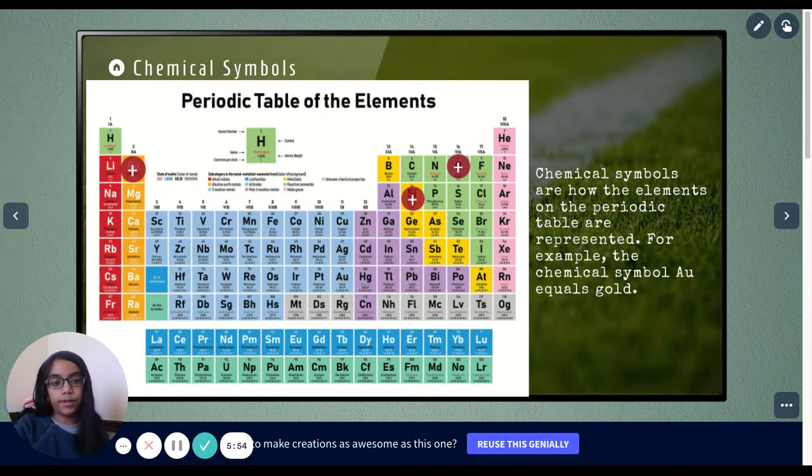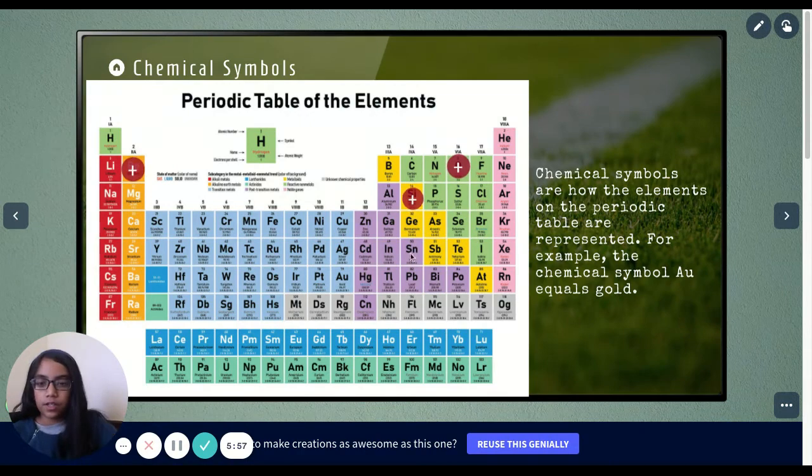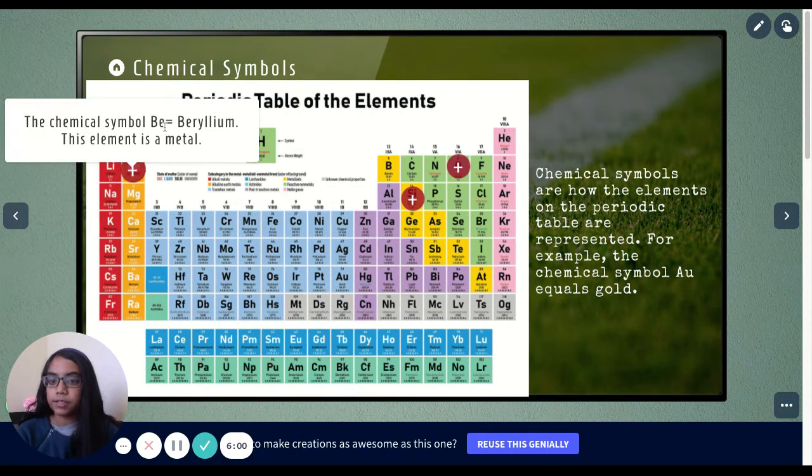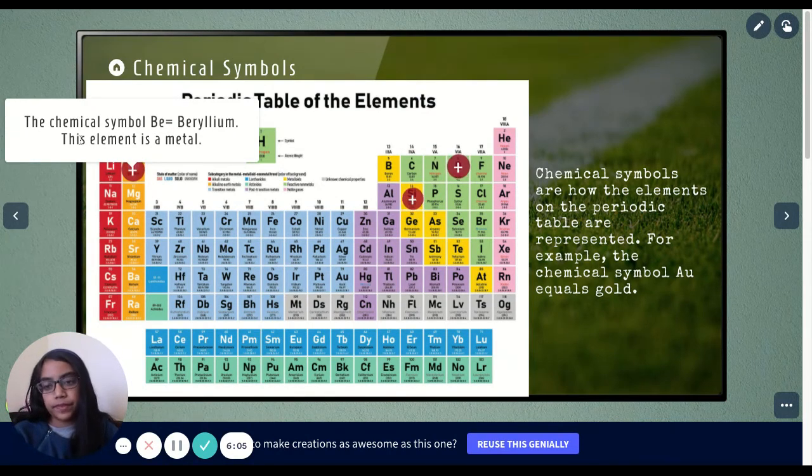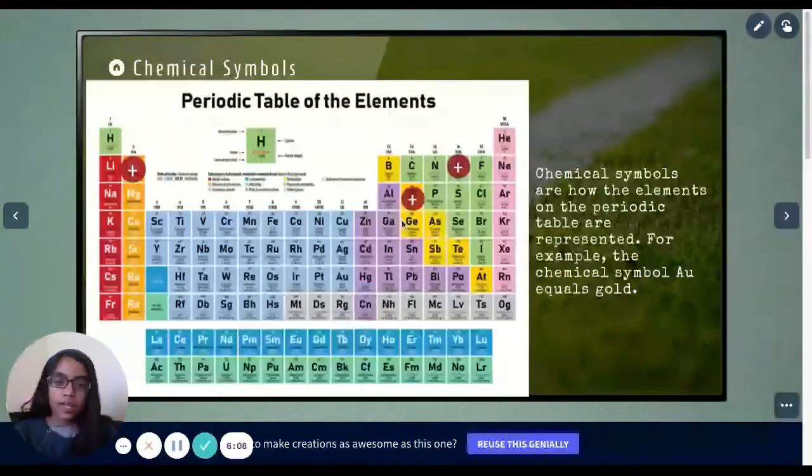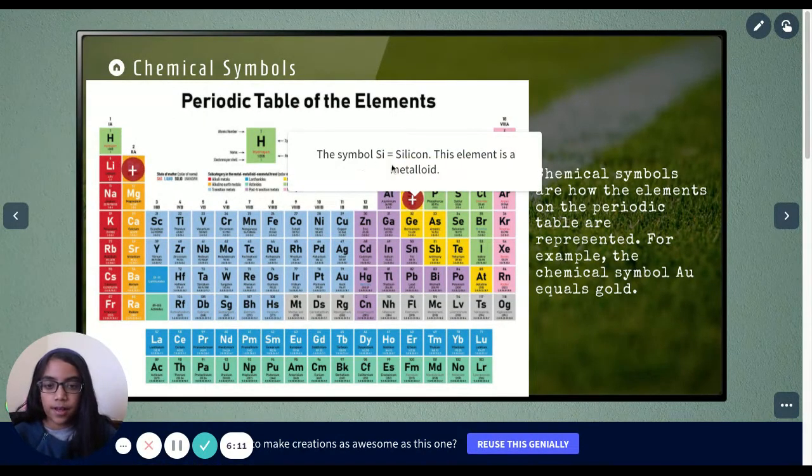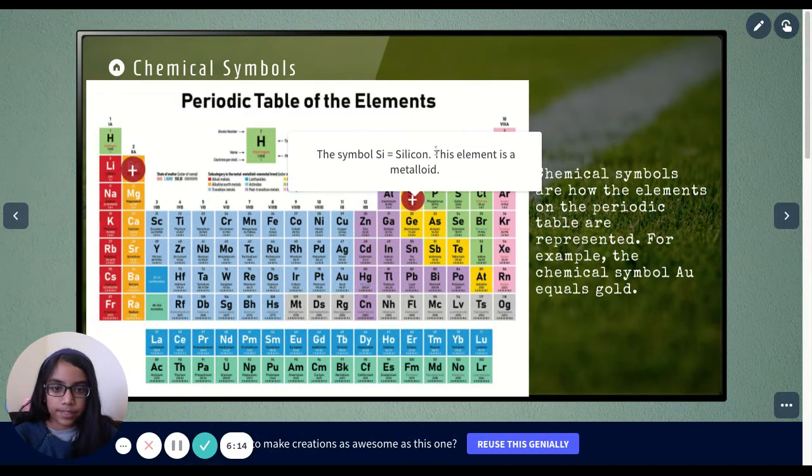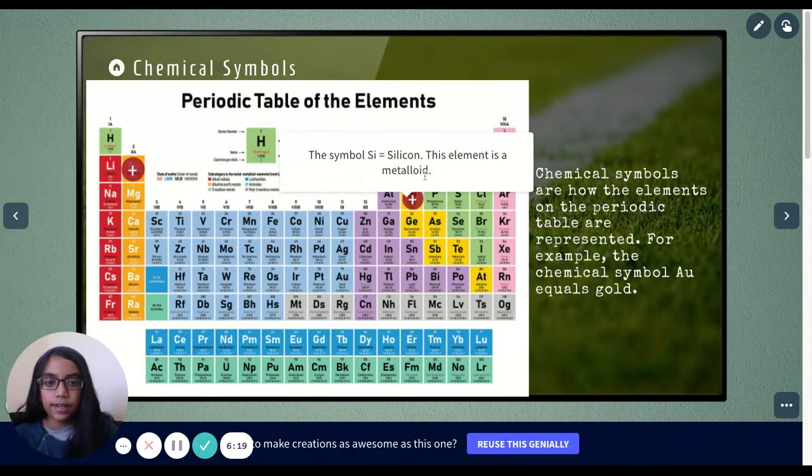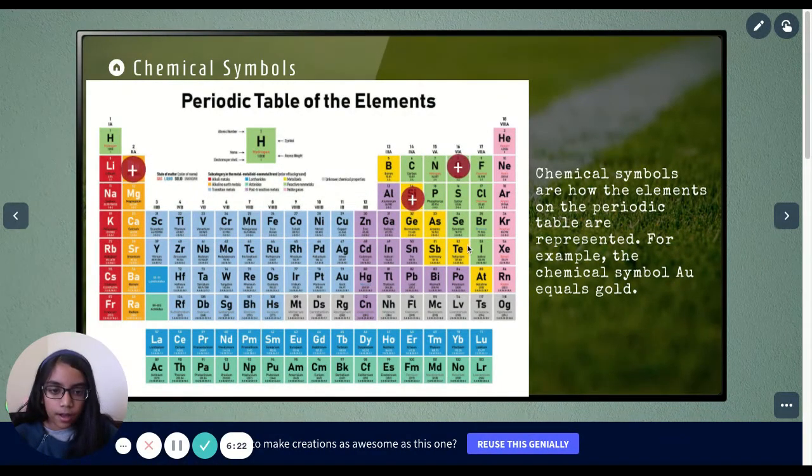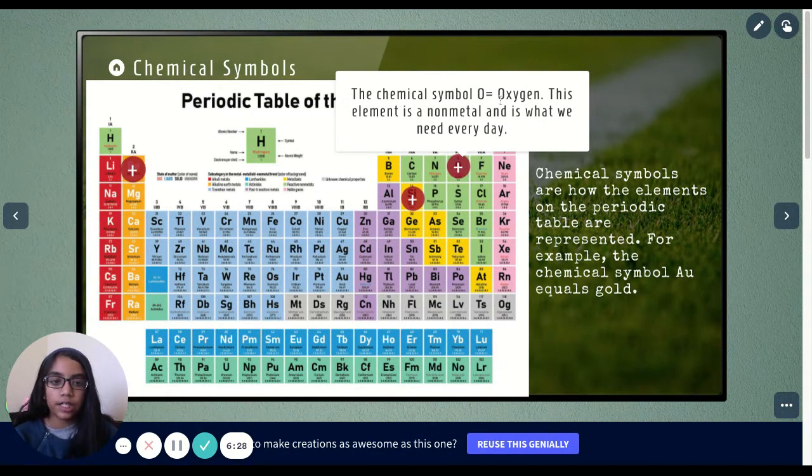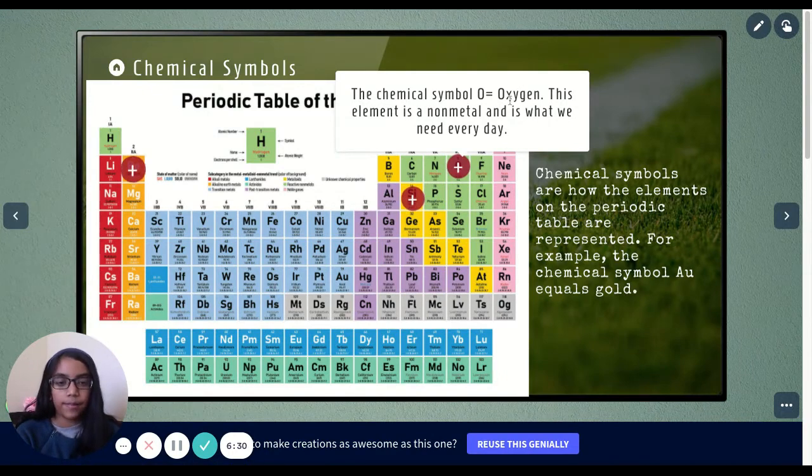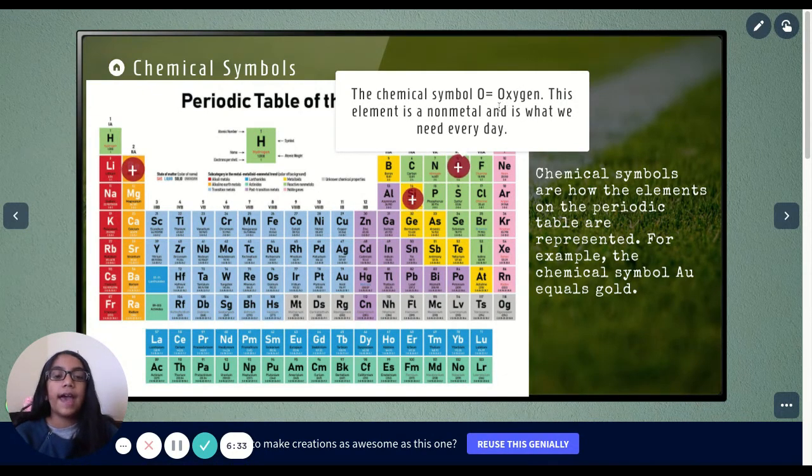For example, the chemical symbol AU equals gold. The chemical symbol BE equals beryllium, which is beryllium. This element is a metal. The symbol SI is silicon. It represents silicon. This is a metalloid because it's along the border of the zigzag line. The chemical symbol O equals oxygen. This element is a non-metal and is what we need every day.